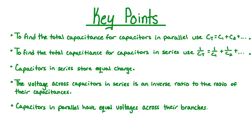Key points: To find the total capacitance for capacitors in parallel, use CT equals C1 plus C2 plus dot dot dot. To find the total capacitance of capacitors in series, use 1 over CT equals 1 over C1 plus 1 over C2, and so on. Capacitors in series store equal charge. The voltage across capacitors in series is in an inverse ratio to the ratio of their capacitances. Capacitors in parallel have equal voltages across their branches.